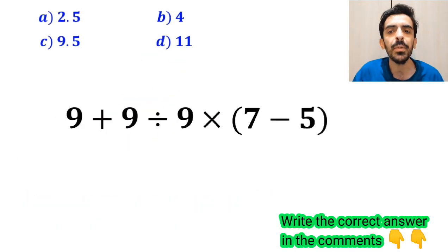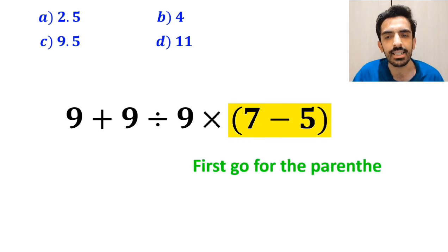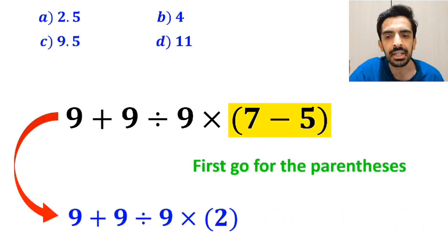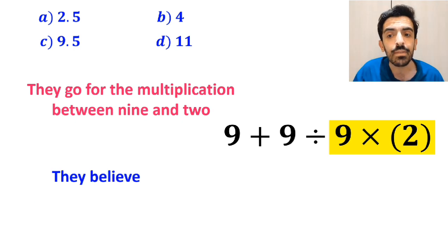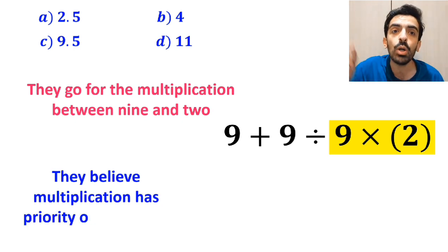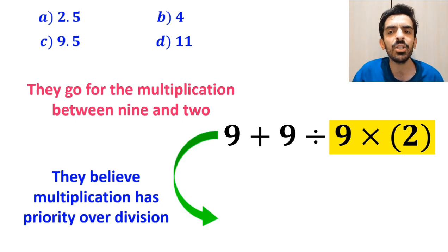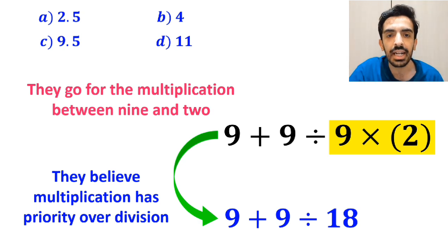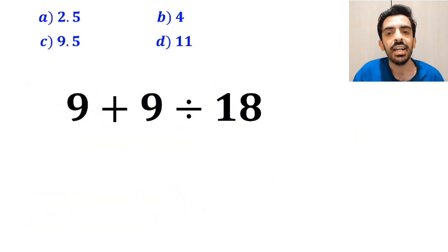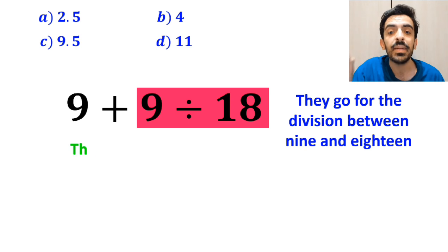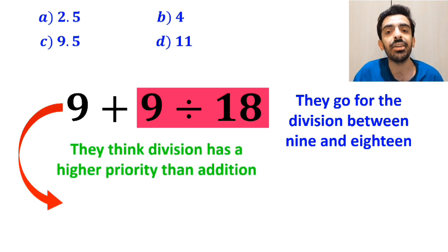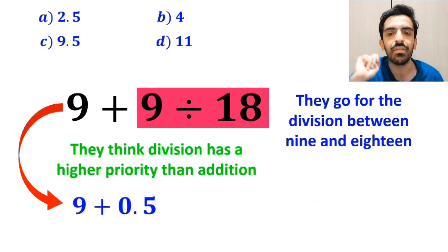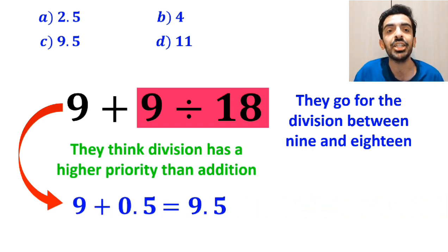Also, some people when solving this question first go for the parenthesis, and rewrite this expression as 9 plus 9 divided by 9 times 2. In the next step, they go for the multiplication between 9 and 2, because they believe multiplication has priority over division. So this expression simplifies to 9 plus 9 divided by 18. Then they go for the division between 9 and 18, because they think division has a higher priority than addition. And they rewrite this expression as 9 plus 0.5, which ultimately gives them the answer 9.5.